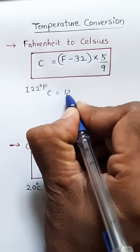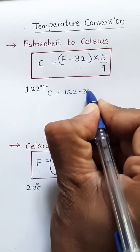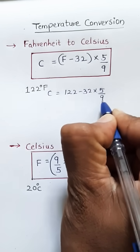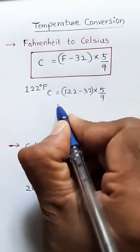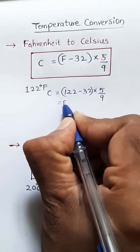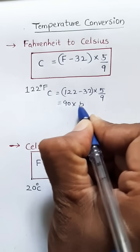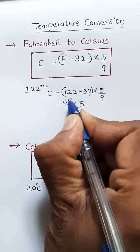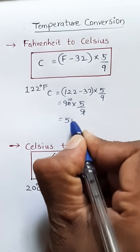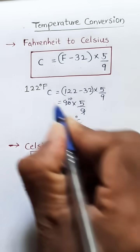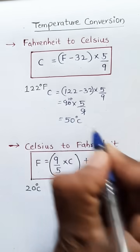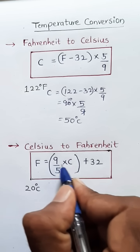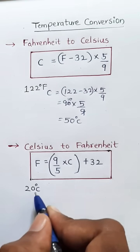C equals, in place of F we write 122, so 122 minus 32 into 5 by 9. 122 minus 32 is 90, 90 into 5 by 9 is 50. Therefore, 122 degrees Fahrenheit equals 50 degrees Celsius.